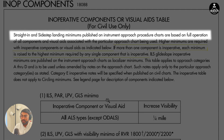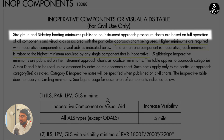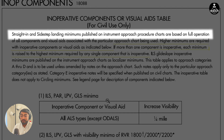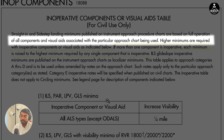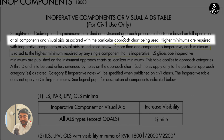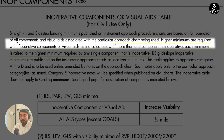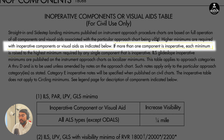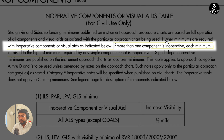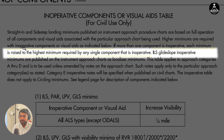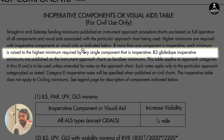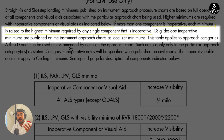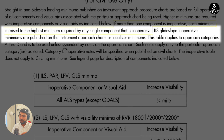It is very important to read the note. Straight-in and sidestep landing minimums published on instrument approach procedure charts are based on full operation of all components and visual aids associated with the appropriate chart being used. Higher minimums will be required with inoperative components or visual aids as indicated below. If more than one component is inoperative, each minimum is raised to the highest minimum required by any single component that is inoperative. We'll come back to this once we understand how to use it with one component inoperative.